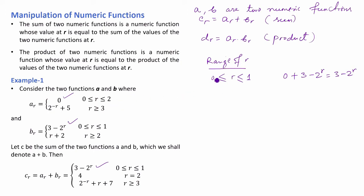Since we know that the domain of the numeric function is the set of natural numbers, we get values for r equal to zero, one, and then the next number, two. For c at r equal to two, the value of function a is zero and the value of function b is r plus two, and this applies for r greater than or equal to two.